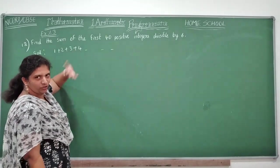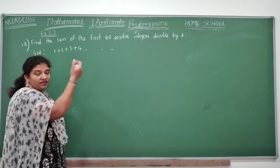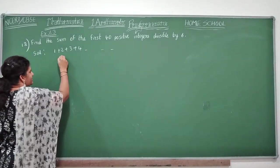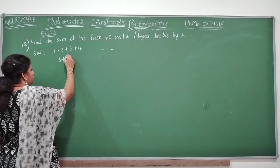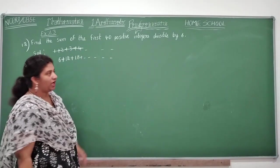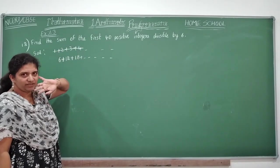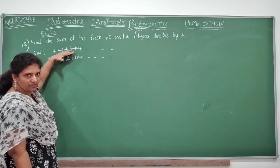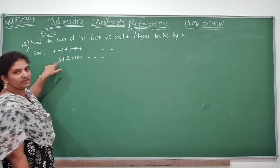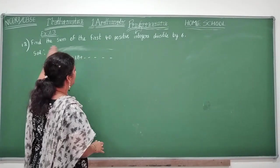1, 2, 3, 4, 5, 6. Look here, let's write here. First 40 positive - like this we go on writing, there is a habit, but we will forget to read the next point. You should be very careful. First 40 positive integers which are divisible by 6. Means are these first 40? No.